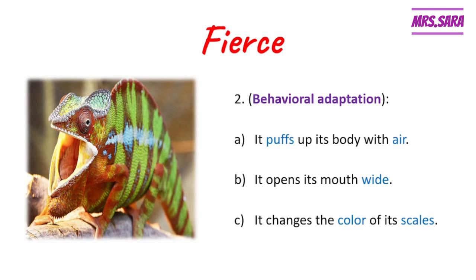So the panther chameleon has structural and behavioral adaptations. Structural adaptations include brightly colored scales that change to provide camouflage, two eyes that move independently in opposite directions — one searching for food and the other looking out for danger — V-shaped legs, and a tail-like hand. Its behavioral adaptation is that it fears when it feels danger: it puffs its body with air, opens its mouth widely, and changes the color of its scales.